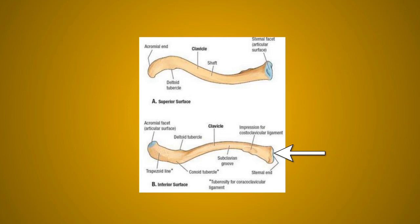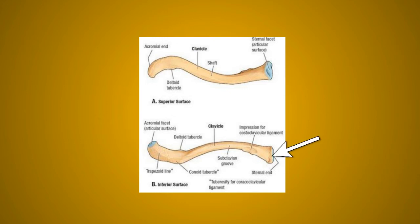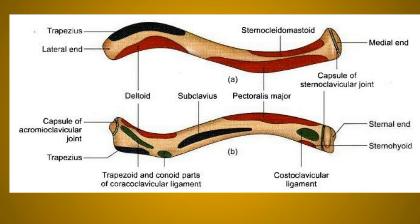The medial end is also known as the sternal end and is quadrangular in structure. It articulates with the clavicular notch of the manubrium sternum to form the sternoclavicular joint. So the lateral end forms the acromioclavicular joint, while the medial end forms the sternoclavicular joint. The articular surface also extends to the inferior aspect for articulation with the first costal cartilage.